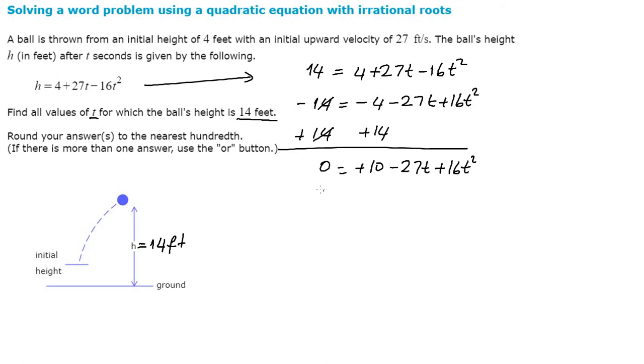Let's go ahead and write it in the standard form. So the equation turns to be 16t squared minus 27t plus 10 is equal to 0.